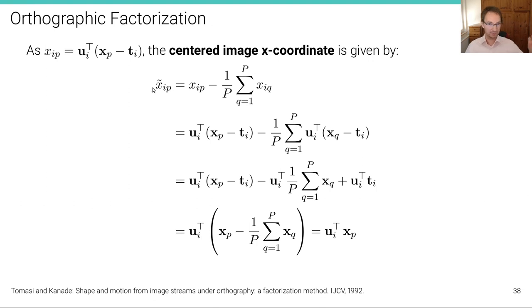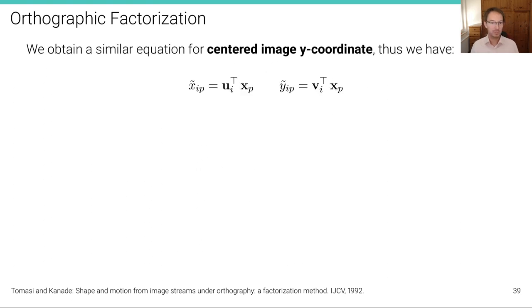And the same is also true, we obtain a similar equation for the y-coordinate, so we have these two expressions, x̃ip, this is the u-axis or the x-axis of the i-th camera coordinate system, and this is the y-axis of the i-th camera coordinate system. We have these simple linear projections to obtain the centered coordinates.